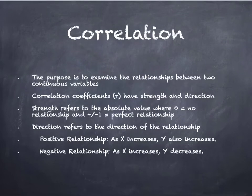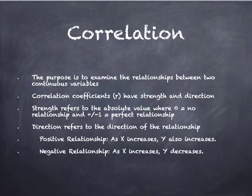So correlation — the purpose here is to examine the relationship between two continuous variables. Correlation coefficients are presented in strength and direction, where strength refers to the absolute value. A correlation coefficient can range from negative one to positive one, so the closer the number is to the absolute value of one, that's going to be a strong relationship, and the closer the value is to zero, that indicates no relationship or a very weak relationship.